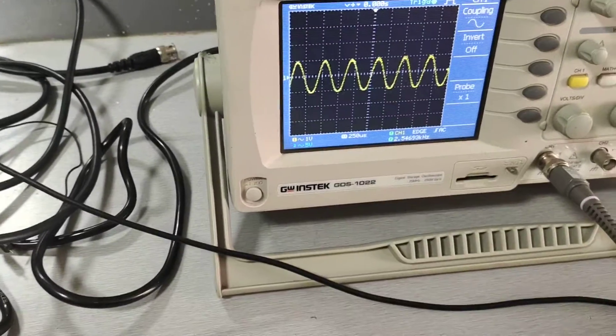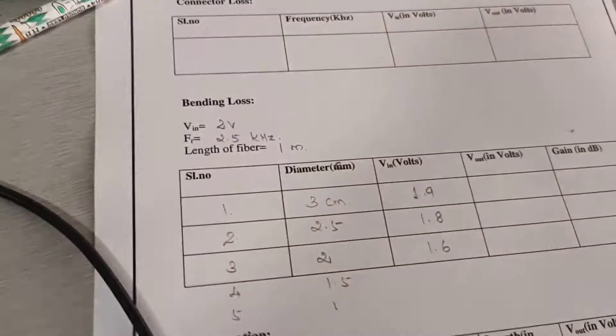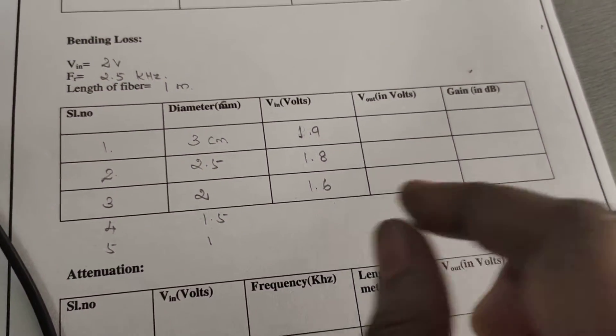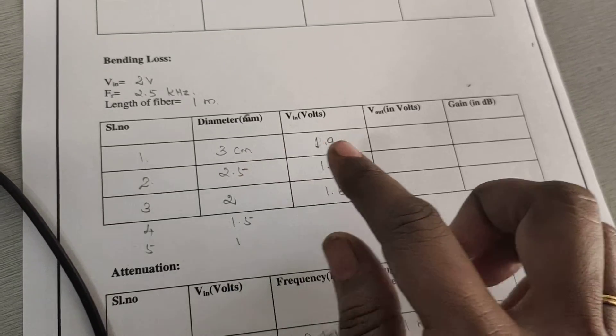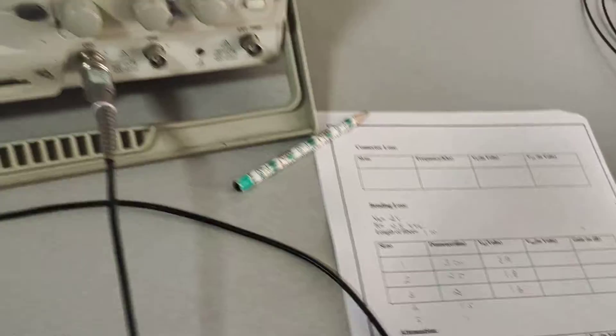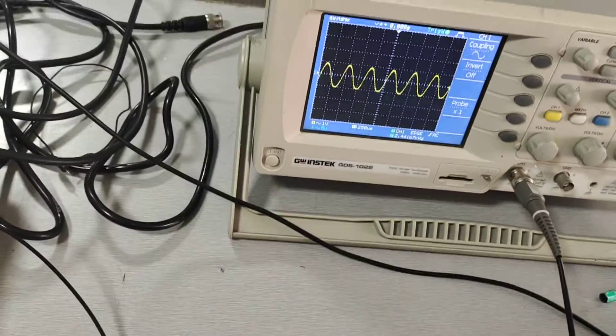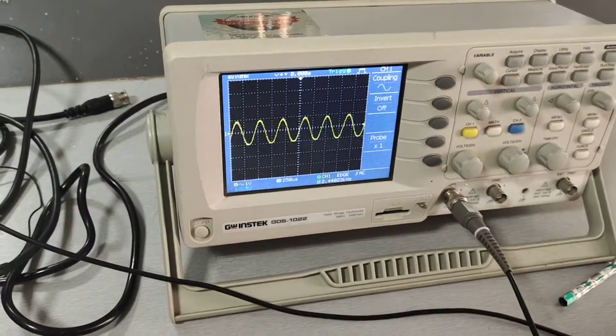You note down what is the output voltage and correspondingly note it down here. We take the output for the 3 centimeter bend radius, and similarly we take the output voltage for 2.5, 2 centimeter, 1.5, and 1 centimeter bend radii.